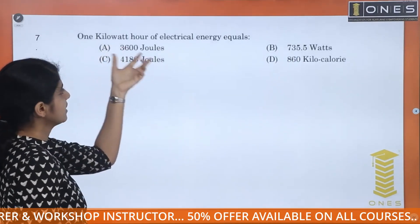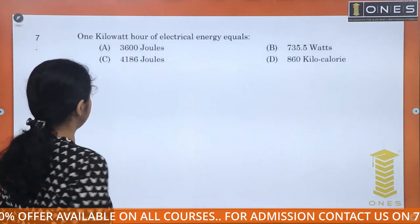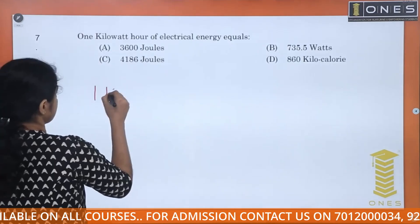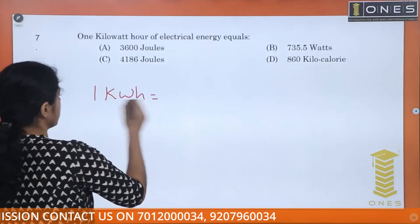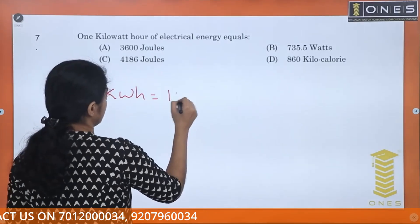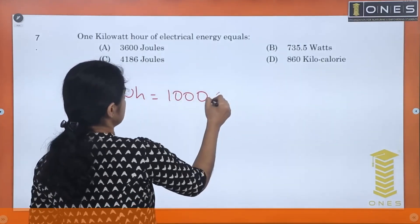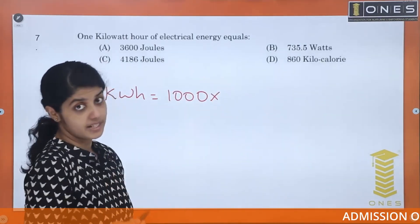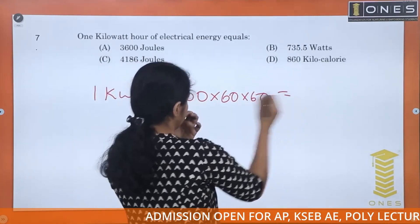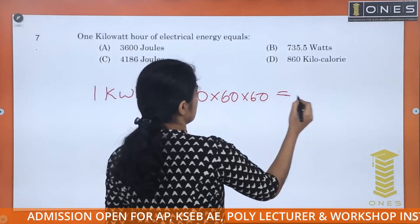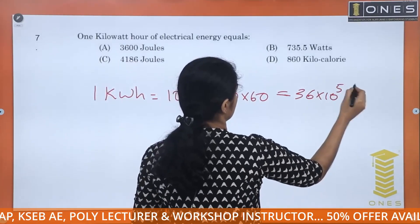Let's convert 1 kWh of electrical energy into joules and calories. 1 kWh equals 1000 W × 3600 seconds, which gives us 3600 J — wait, that is 3.6×10⁶ J, confirming 3600 J at the base unit level.